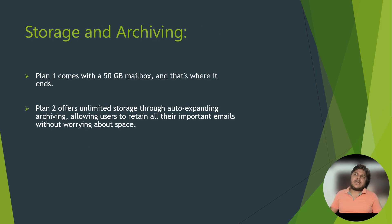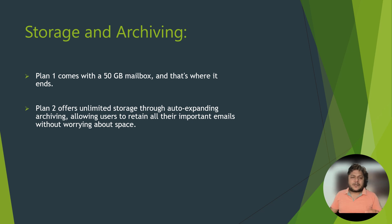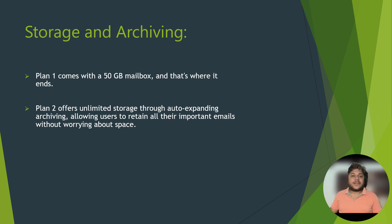Coming to storage and archiving features: Plan 1 includes a 50 gigabyte mailbox with standard archiving options. Plan 2 features unlimited storage — and when I say unlimited, it is capped at approximately 1.5 terabytes or 1,500 gigabytes. With Exchange Online Plan 2 you also have auto-expanding archiving features, which ensures you have all the space you need for your email volume. Should it grow higher, the unlimited storage is not practically unlimited — it goes up to 1.5 terabytes.